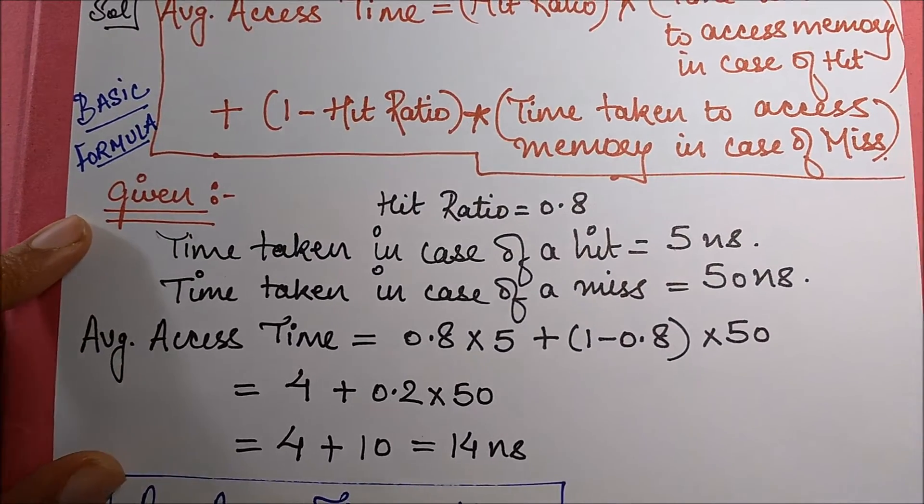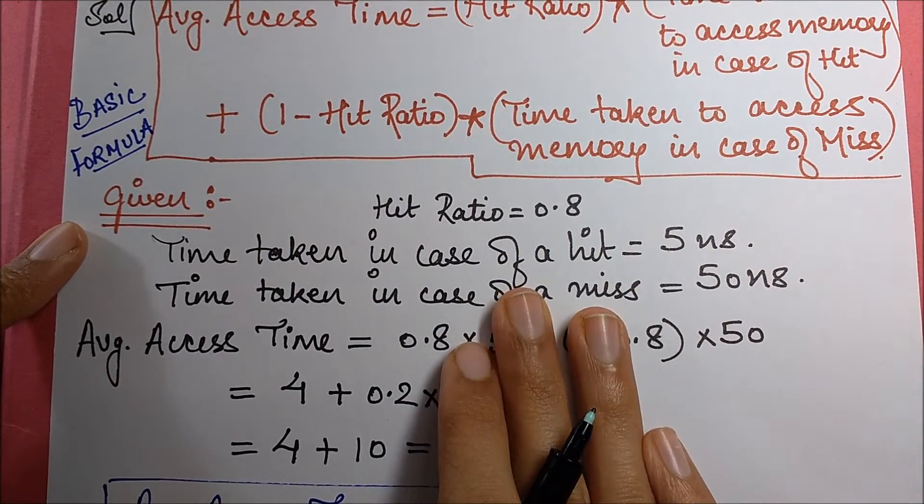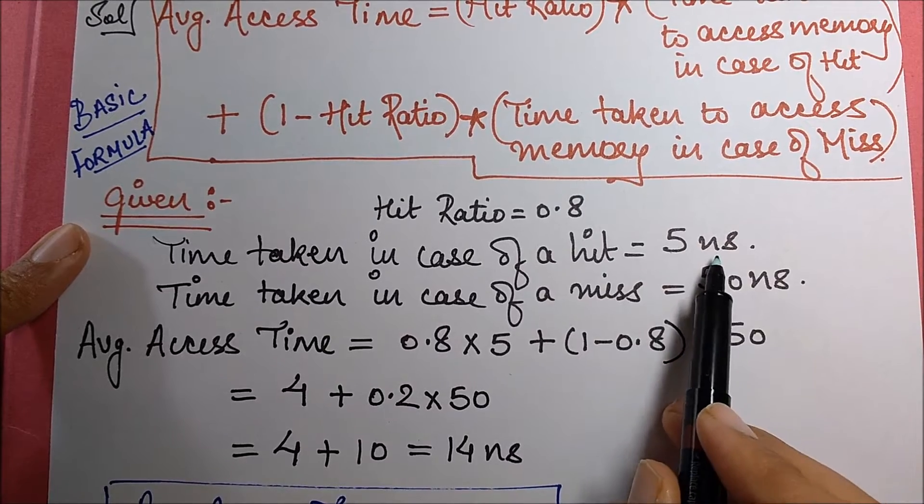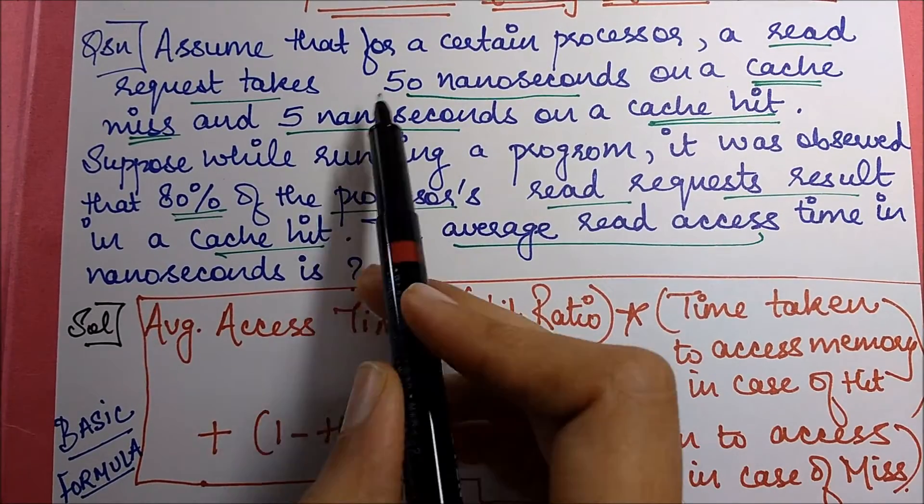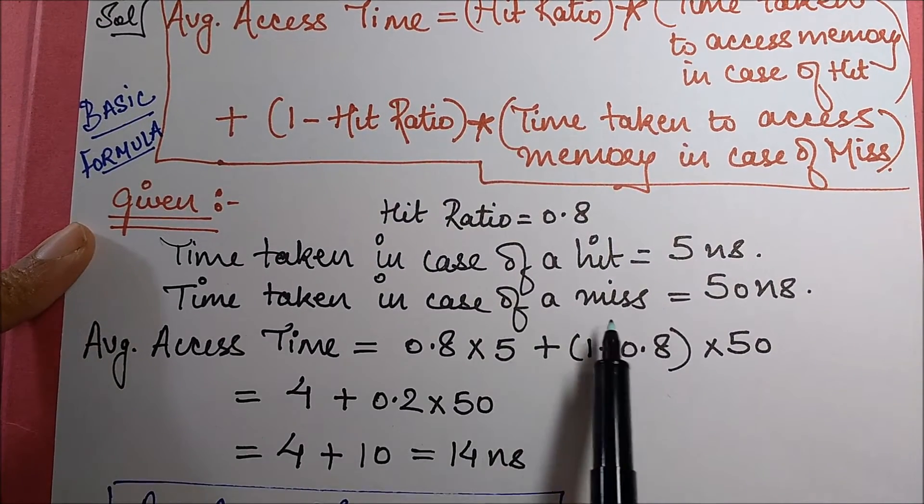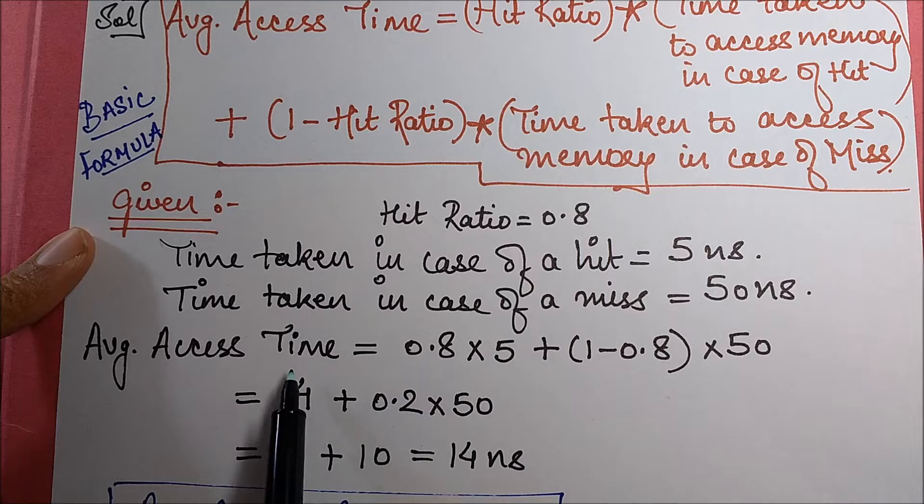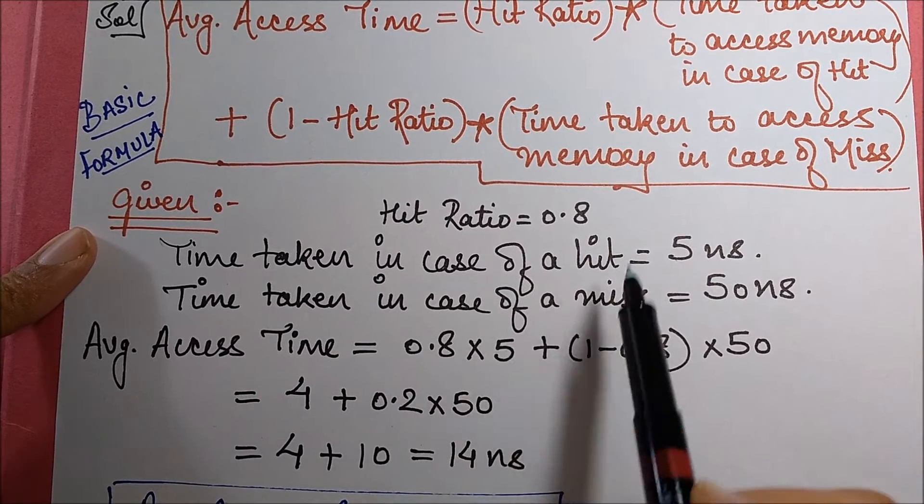Quickly we jot down the things given in the question. Hit ratio is 0.8. Time taken in case of a hit is 5 nanoseconds, as marked by me over here. This was for cache hit. Then time taken in case of a miss is 50 nanoseconds.